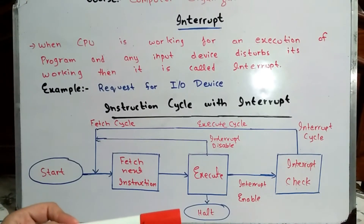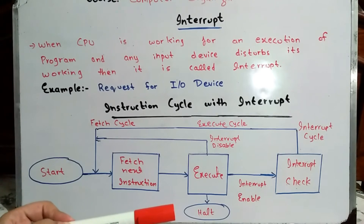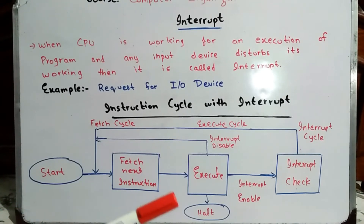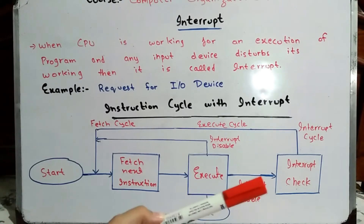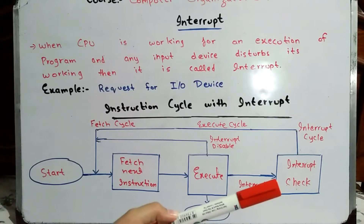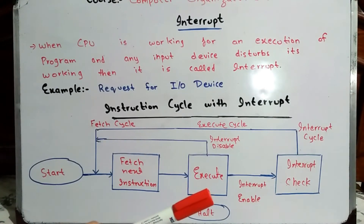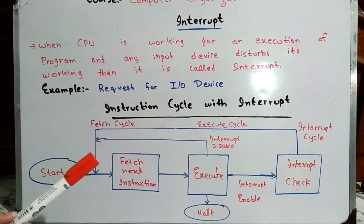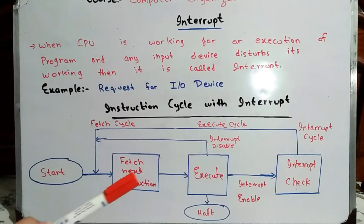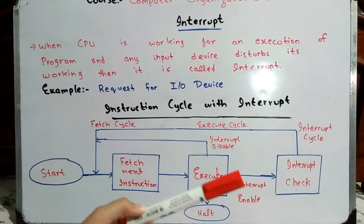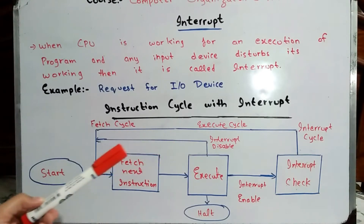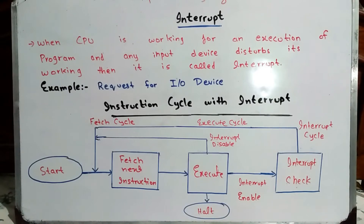There is a condition where one program was being executed but there was an error or failure, so we cannot continue that program — then we will halt. If an interrupt occurs, we check and handle the interrupt. If there is no request from an input or output device, we come to the interrupt check stage, and if there is no interrupt, we move again to fetch the instruction.